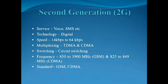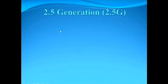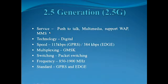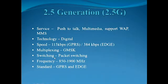Now we discuss 2.5 generation. The features of 2.5 generation are: service — voice, multimedia support, WAP, MMS. Technology: digital. Speed: 115 kilobytes per second for GPRS and 384 kilobytes per second for EDGE. Multiplexing: GMSK. Switching: packet switching. Frequency: 850 to 1900 megahertz. Standard: GPRS and EDGE.